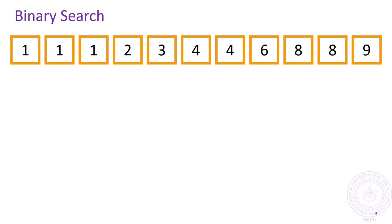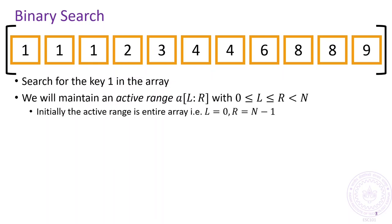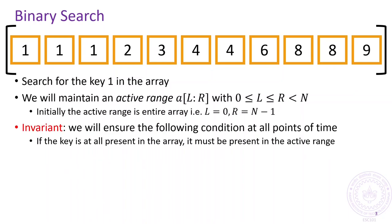Let's take a concrete example to understand this algorithm better. Suppose we are searching for the key 1. We will maintain something called an active region within the array. Initially, the active region will be the entire array. For this algorithm, we will make use of the concept of invariants. Invariants are conditions or properties that we make sure always hold throughout the execution of our algorithm — that is why they are called invariants, they don't vary at all. Our invariant shall be the property that we will always ensure that the active region is such that the key, if at all present in the array, will always lie inside the active region.